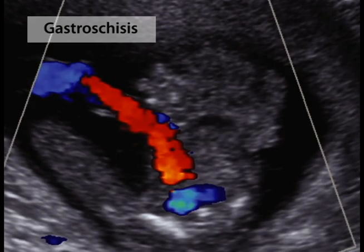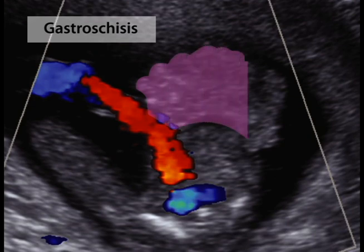Color Doppler has been added to this image to more clearly show the umbilical cord. This demonstrates that the bowel has herniated not into the cord base, but through a separate defect at the right.